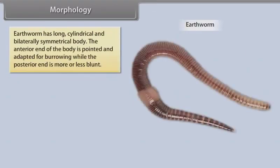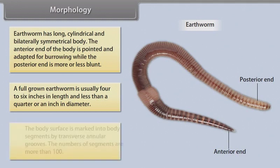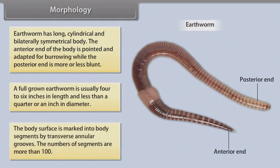Earthworm has a long, cylindrical and bilaterally symmetrical body. The anterior end is pointed and adapted for burrowing, while the posterior end is more or less blunt. A full-grown earthworm is usually four to six inches in length and less than a quarter inch in diameter. The body surface is marked into segments by transverse annular grooves, and the number of segments is more than 100.